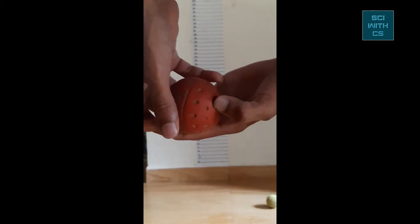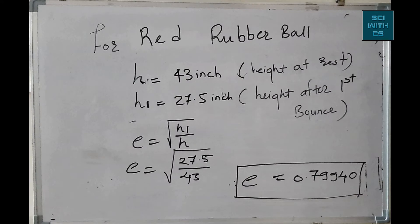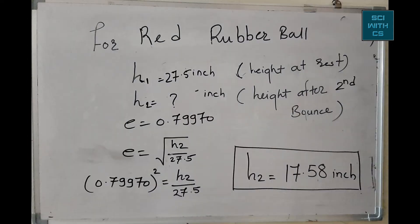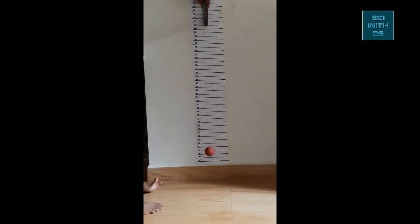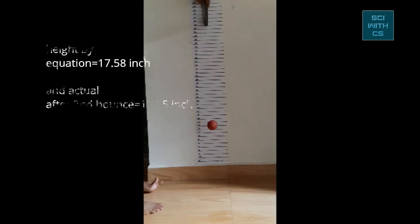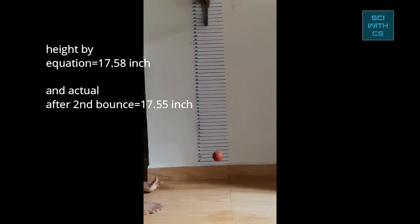This is our red rubber ball, which is quite bouncy. Let's calculate the coefficient of restitution for it. The height before the bounce is 43 inches and h1, the height after the first bounce, is 27.5 inches. Doing the math gives the value of e, and then we calculate h2, the height after the second bounce, to compare the actual result with our theoretical calculation. Dropping the ball from 43 inches, the first bounce reaches the respective height, and after the second bounce we compare — as you can see, there is not much difference between the two readings.